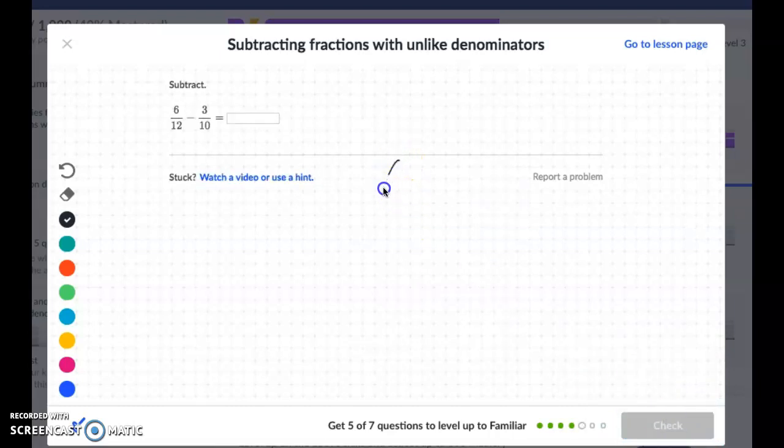Six twelfths take away three tenths. Now this one is going to be a little bit crazy because I can't change my 10 into a 12. And if you use what I've been telling you to do, you're going to say okay, well 12 times 10 is 120. And that's definitely doable, it's just that it's a large number.